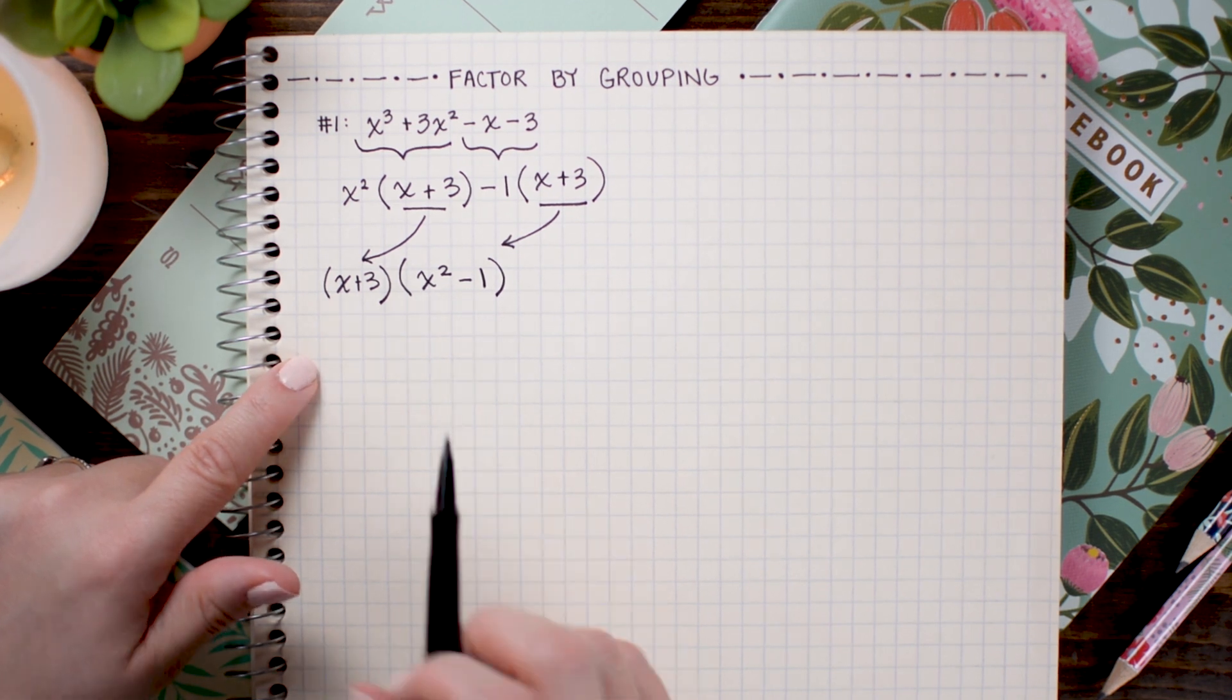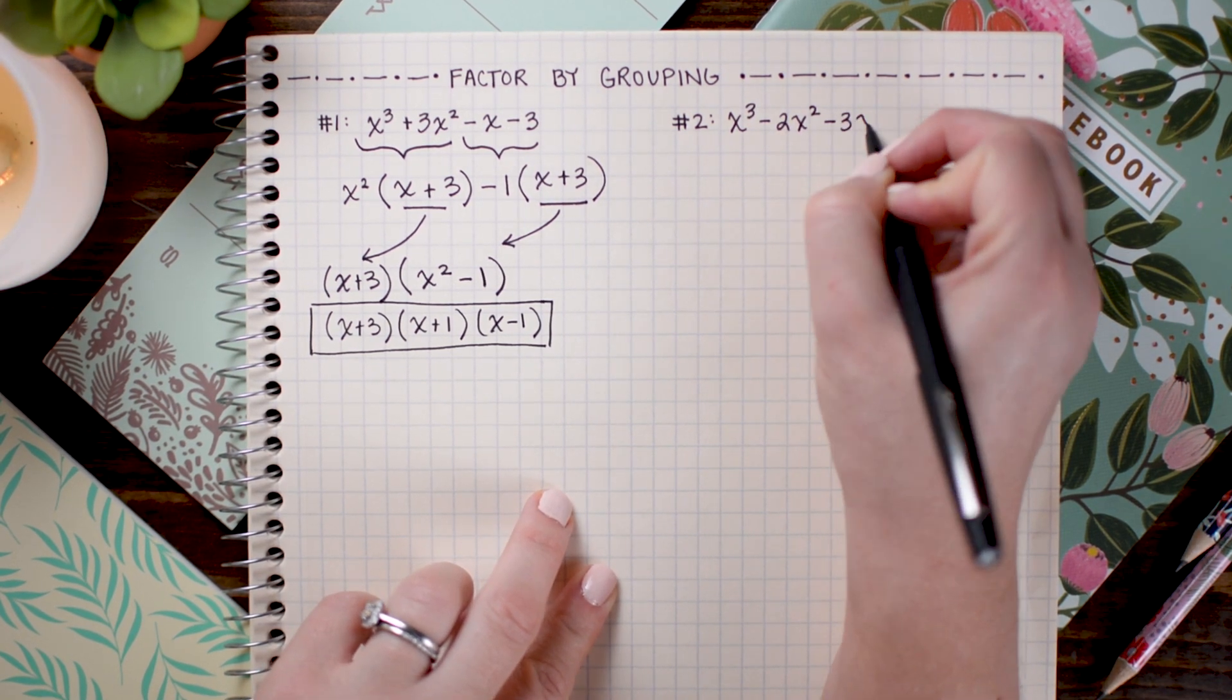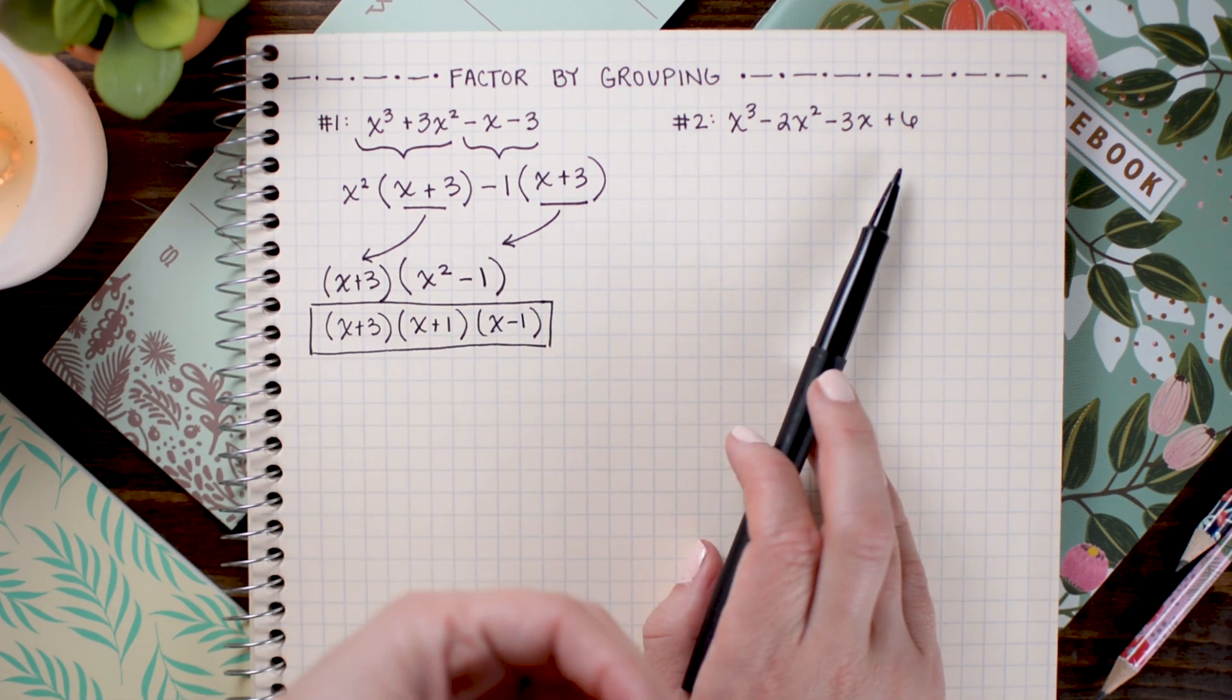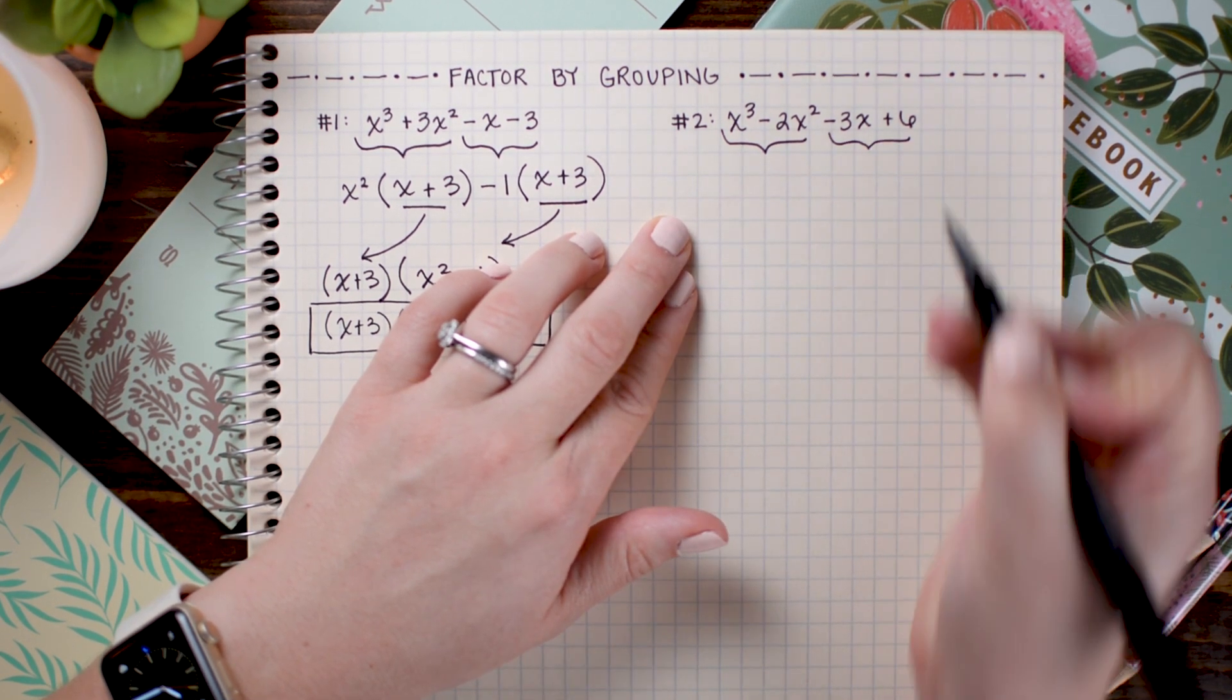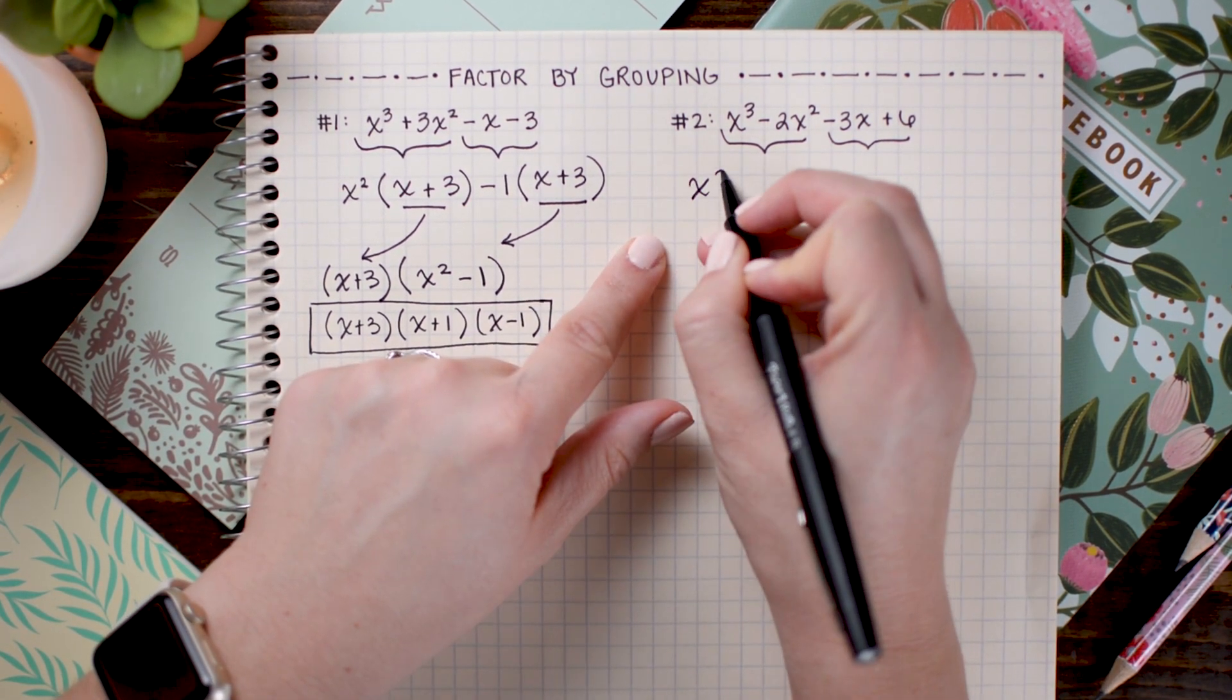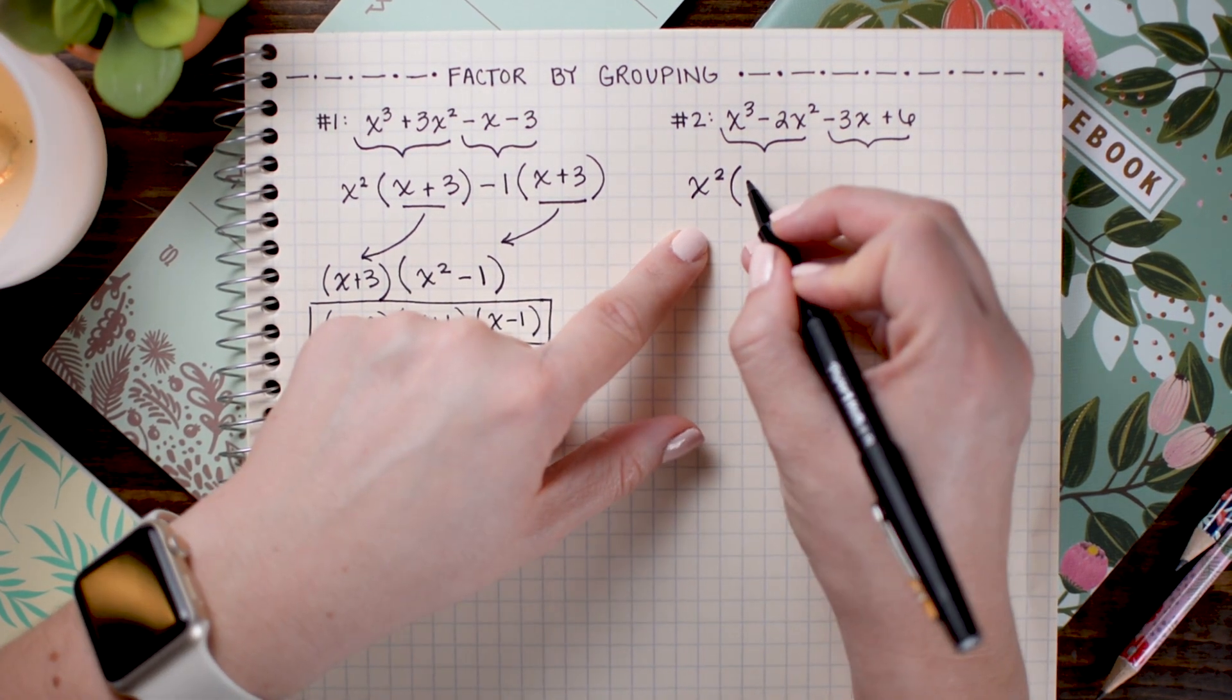So, in this next problem, we have x cubed minus 2x squared minus 3x plus 6. And, once again, I'm going to use the exact same technique. I'm going to look for the GCF of the first two terms and the GCF of the second set of two terms. So, between x cubed and negative 2x squared, the common factor is, again, x squared. So, I'm going to pull that out in front. And then, in parentheses, I'm going to write down what I have after I divide out the x squared from both of these terms. So, I get x minus 2.